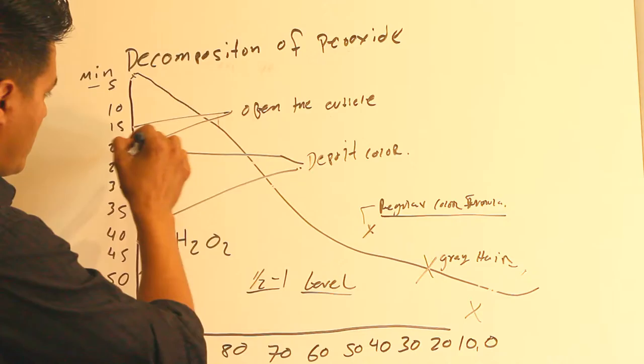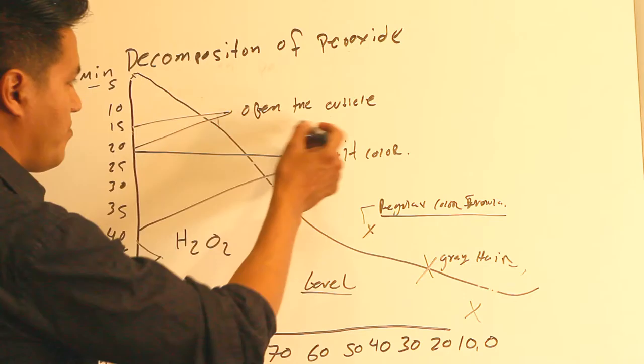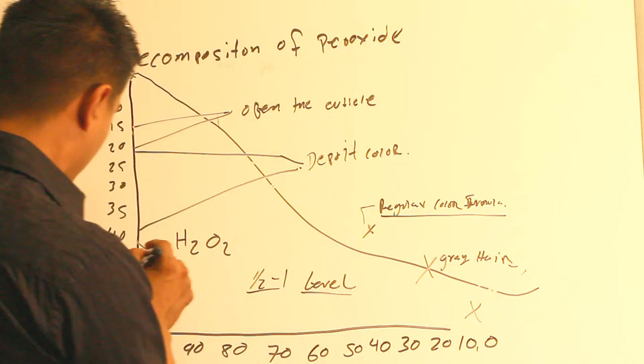I did an arrow right here which shows 15 to 20 minutes - that's what it takes for the cuticle to open. And 20 to 35 minutes - that's what it takes for the color to be deposited. I have a little X right here which basically means the end of processing of the regular color.